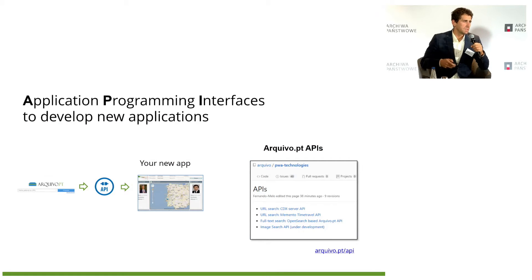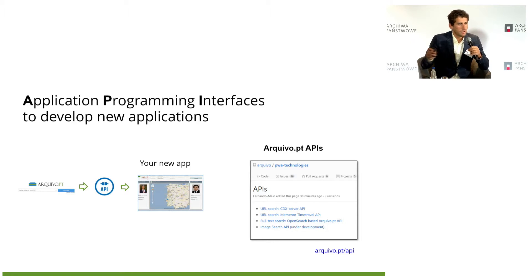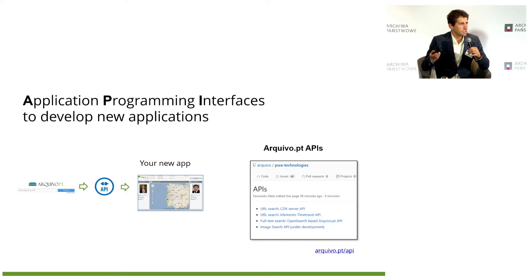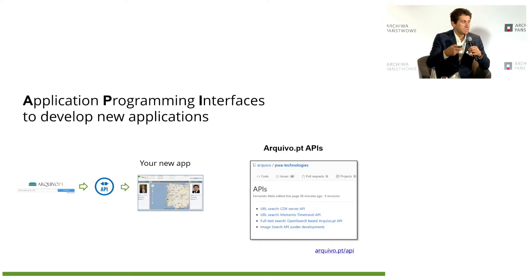All this information and services can be accessed through application programming interfaces. We are a research infrastructure — we know we'll never be able to fulfill the requirements of all research use cases. So we get, preserve, and provide access to information, and we provide APIs so that other researchers can develop innovative applications. We have two APIs specific to our service, and for interoperability we also provide the Memento API, which is an international protocol, and the CDX Server API, which is widely supported by most web archives — enabling our archive to interoperate with others.